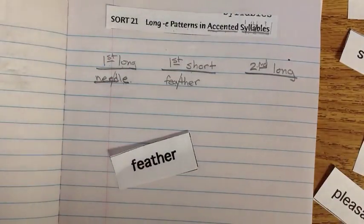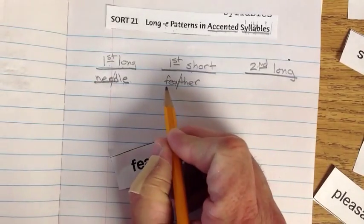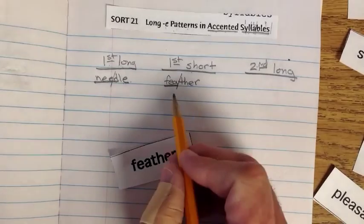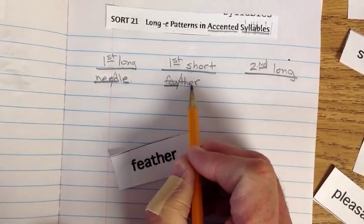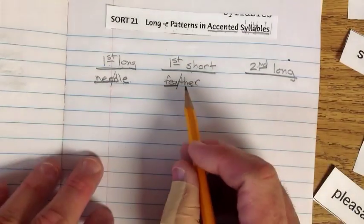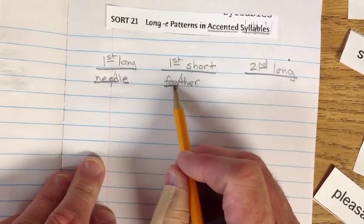See how that one is a little higher, a little lower on that second? That is the accented syllable right there. Feather. Vowels. Vowel. Alright? That's how we tell the syllables. Alright. So there's our short. Feh.